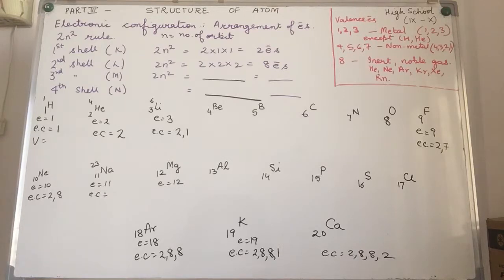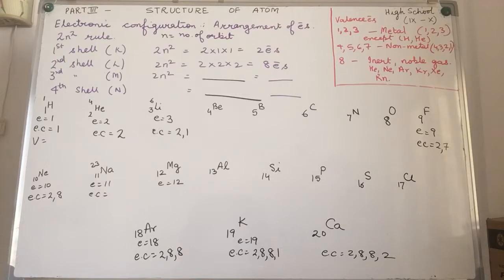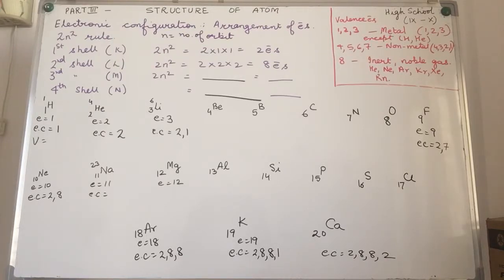What do we mean by electronic configuration? Let us suppose we have a school where there are a hundred students. We cannot put all hundred students in one class and expect them to study at the same level. We need to segregate them according to their ability level, age group, and understanding level — and that is what is called configuration. Arranging the electrons in an atom in different shells is what we call electronic configuration.